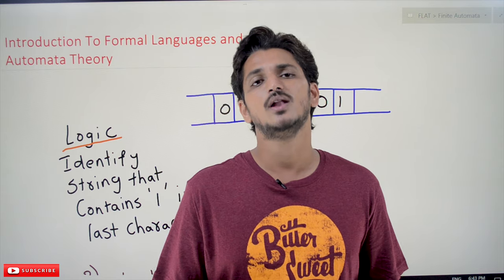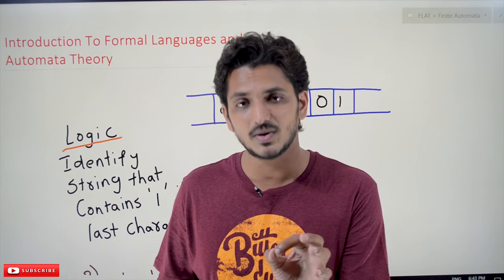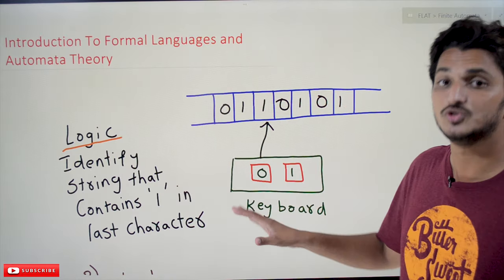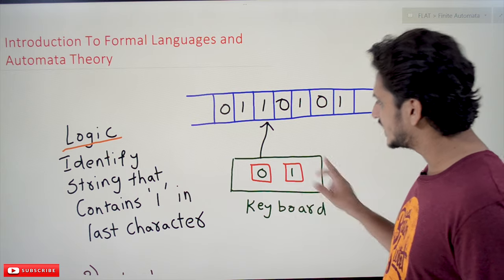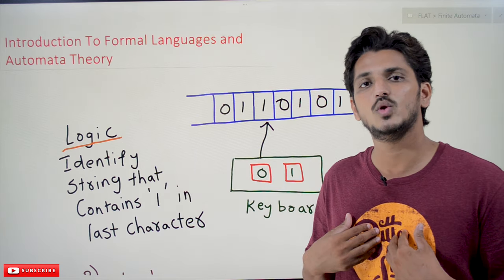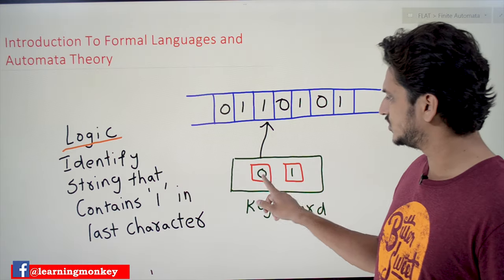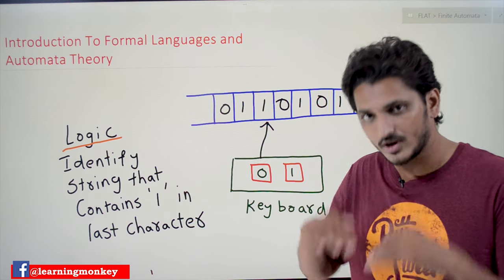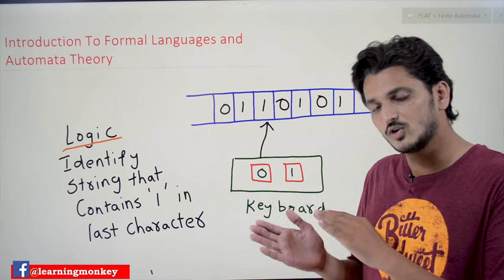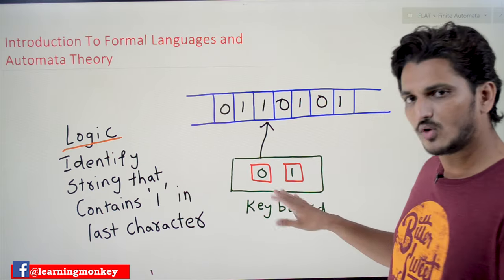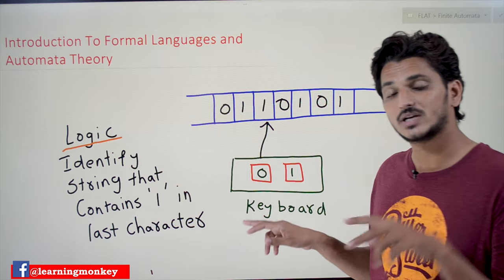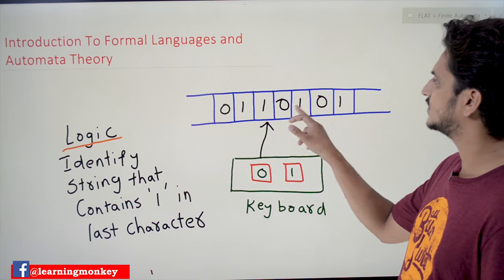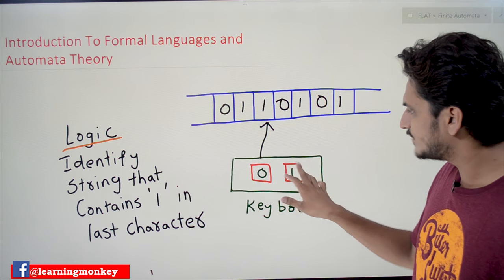Let's take an example to understand what we are going to deal with. Assume that we have a keyboard — for simplicity, we have taken only two keys on it: 0 and 1. Now let's understand our computer system first. When we type some input on the keyboard, assume the string typed is 0 1 1 0 1 0 1 0 1.